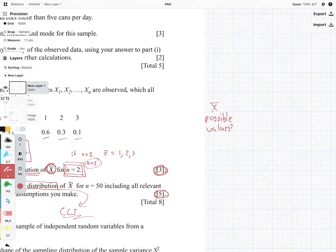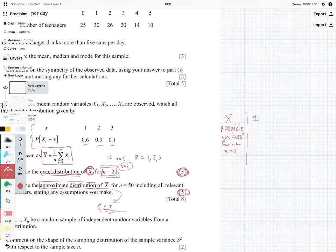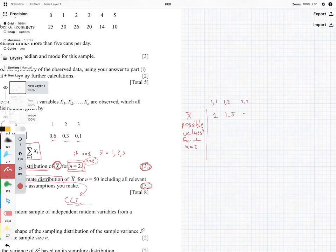But now that n is equal to 2, our possible values are: we could have 1 when both values are 1 and 1. If we have 1 and 2, we get 1.5. If both values are 2 and 2, we get 2. If we have 2 and 3, we get 2.5. And if we have 3 and 3, we get 3. The nice thing is if we have 3 and 1, we get 2 again. So these are the possible values that we can get.